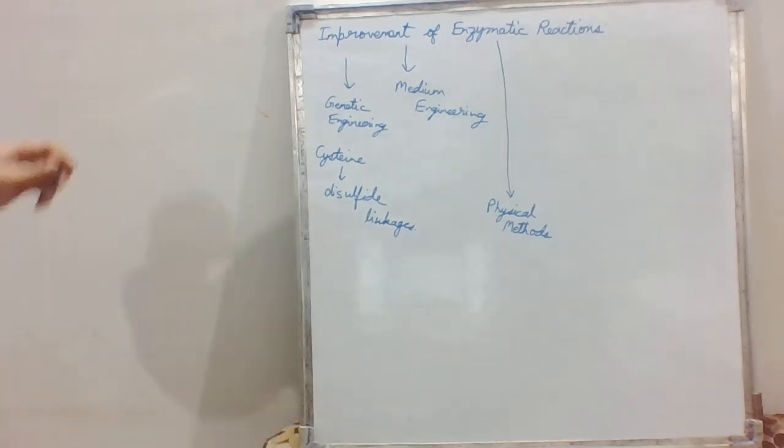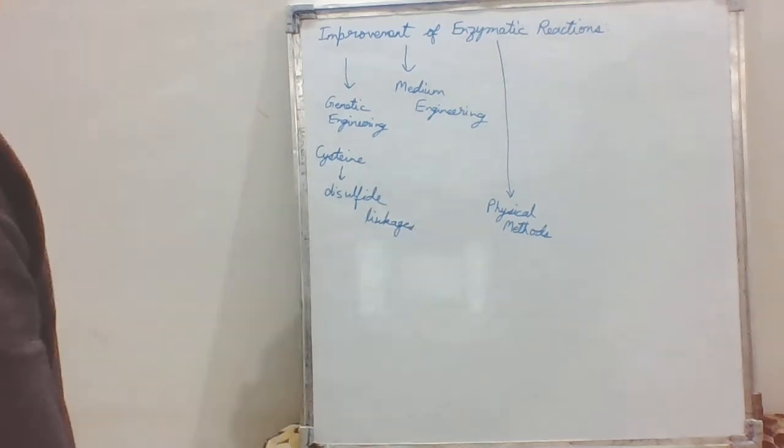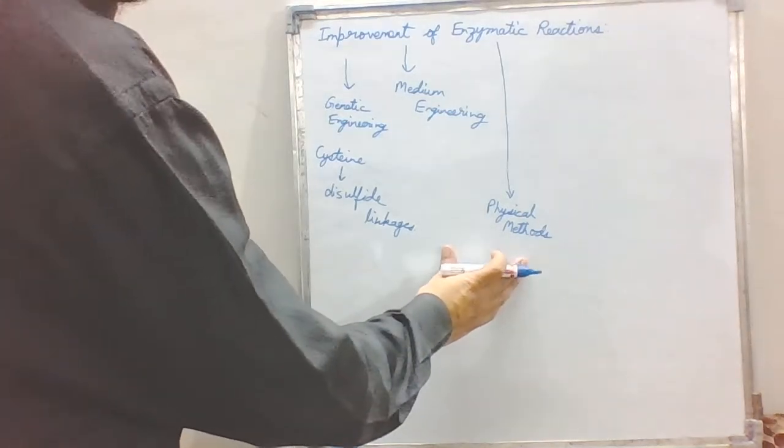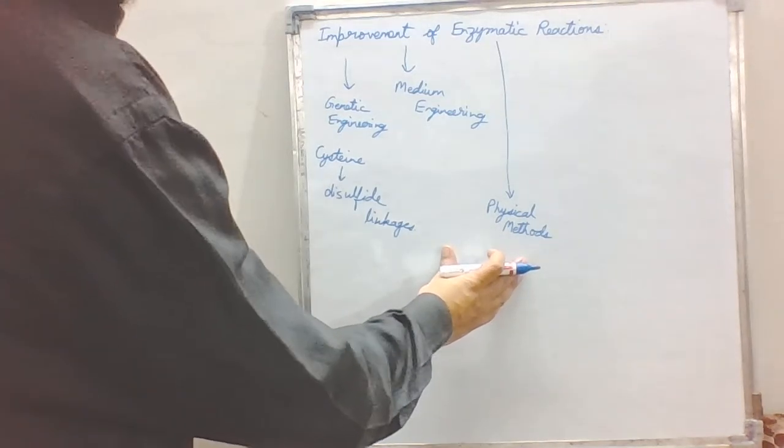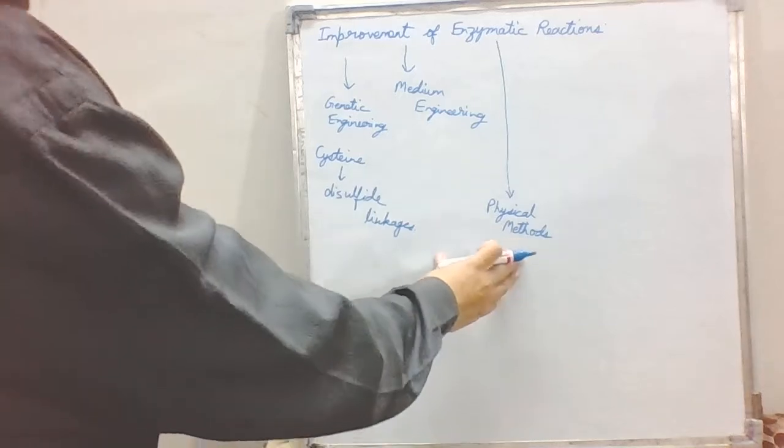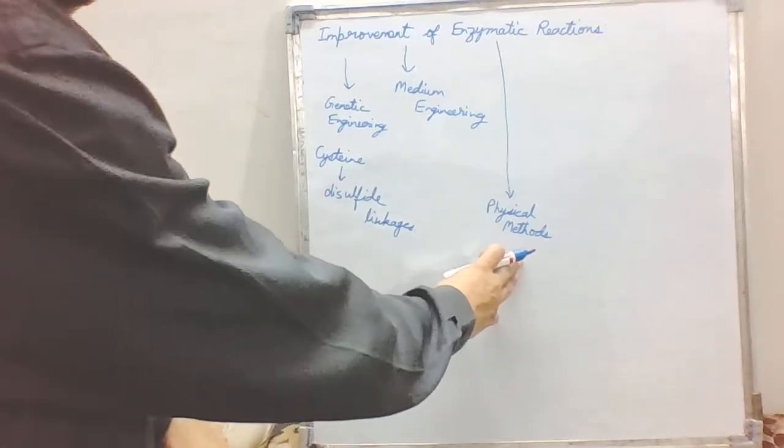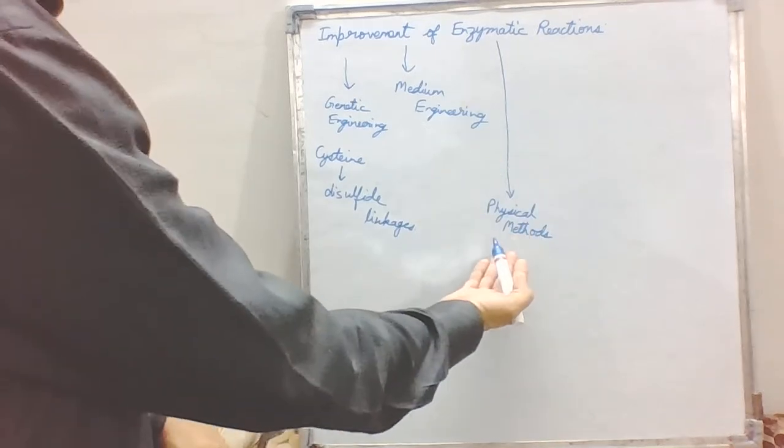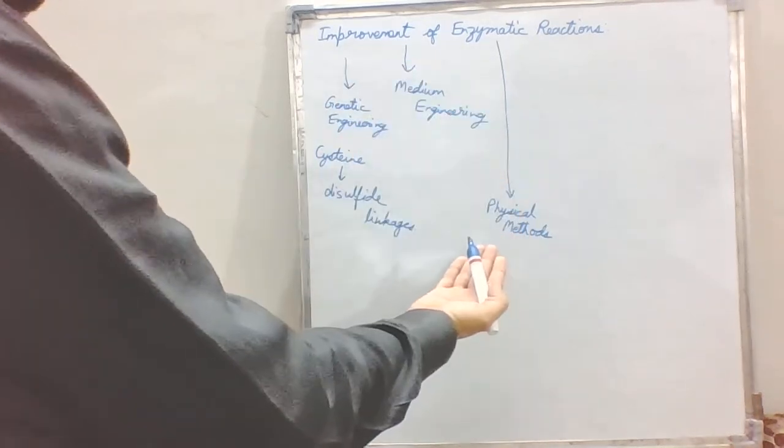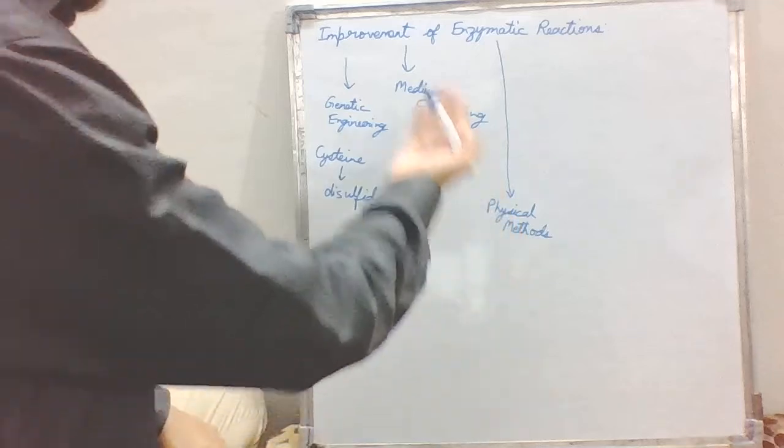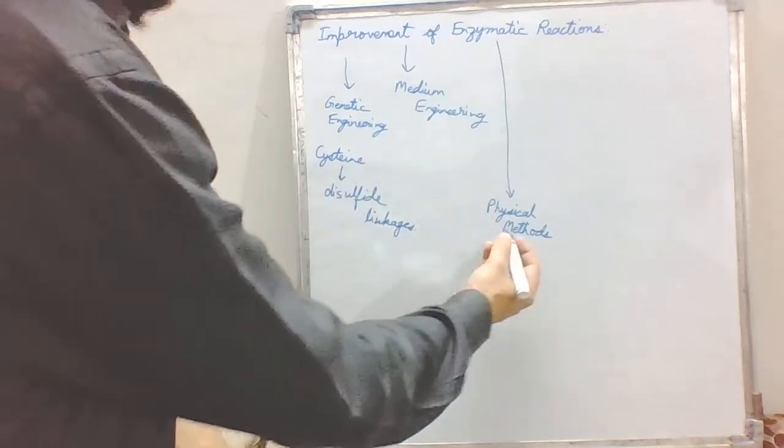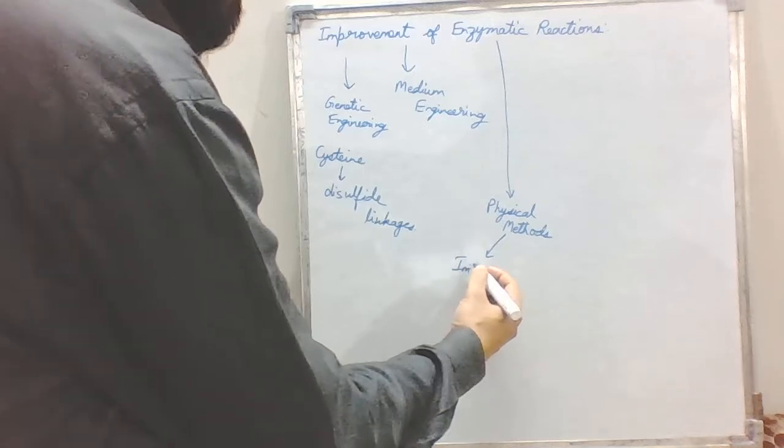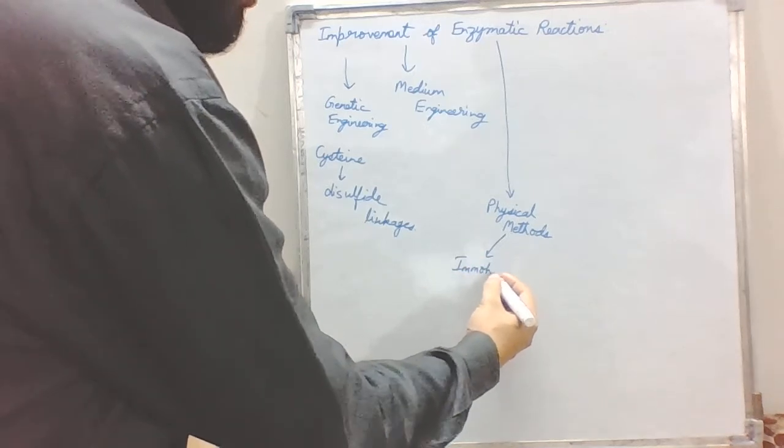In physical methods, this would be the most economical of all the methods. In physical methods we can alter enzyme activities and we can also improve the enzyme properties.